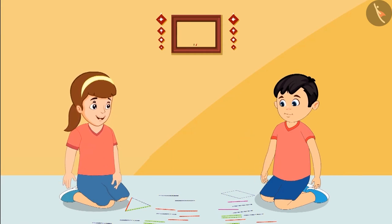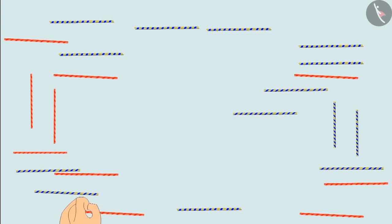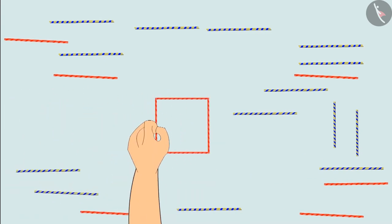Now I will also make a rectangle. Neha, use four equal length straws to make a rectangle. Children, do you remember what we call this shape? Come, let us see.